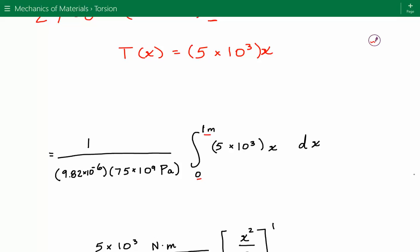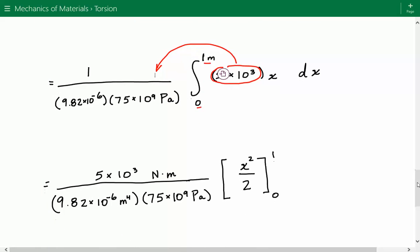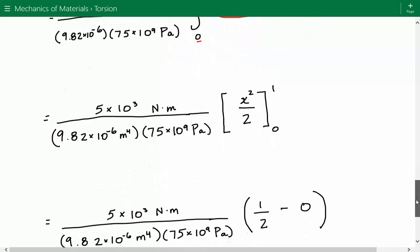We can simplify this integral even further by moving 5 times 10 to the third to the outside of the integral because this is constant. So all we're integrating is x from 0 to 1. When you integrate x, you end up with x squared over 2, evaluated from 0 to 1. Here we just plug in the numbers.